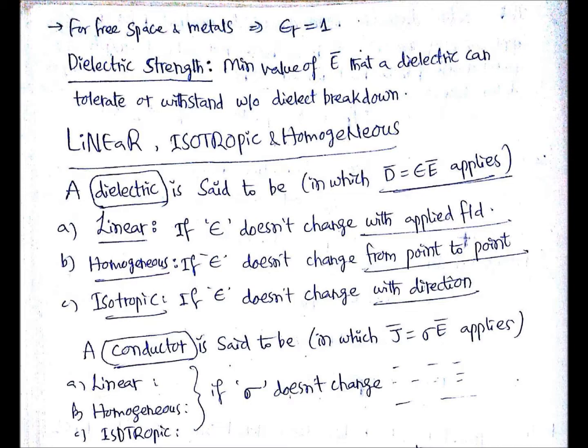Coming to isotropic, if epsilon doesn't change with direction of the applied field, that epsilon or permittivity value should not change, then we can say it as isotropic. Finally, a conductor is said to be...